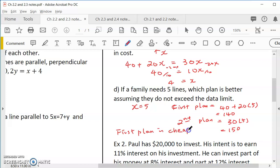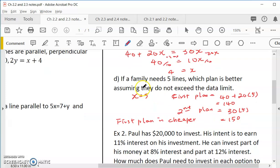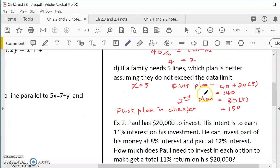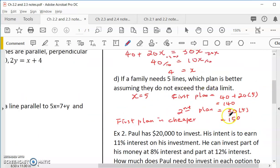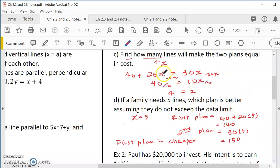So first plan is cheaper. So that would be a better deal if you're ordering five lines. If it's four lines, then they are the same. So that's how you compare this cost. And for C, that's how you solve.